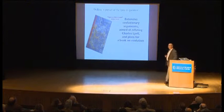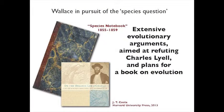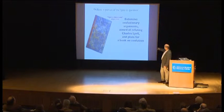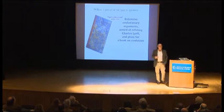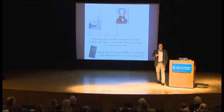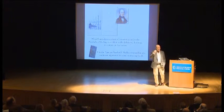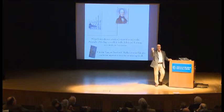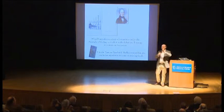Wallace in pursuit of the species question: his so-called species notebook is the clearest exposition of the trend of Wallace's evolutionary thinking through the 1850s, kept from about 1855 to at least 1860 or later, though the most interesting entries end around 1859. Many of those arguments on evolution are aimed squarely at Charles Lyell — whose Principles of Geology was inspiration but also provocative. The second volume was dedicated to refuting species change, taken as the definitive argument against transmutation.